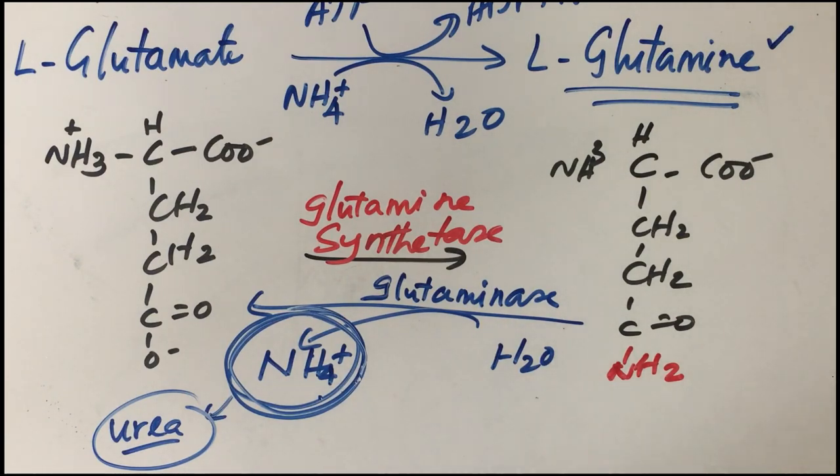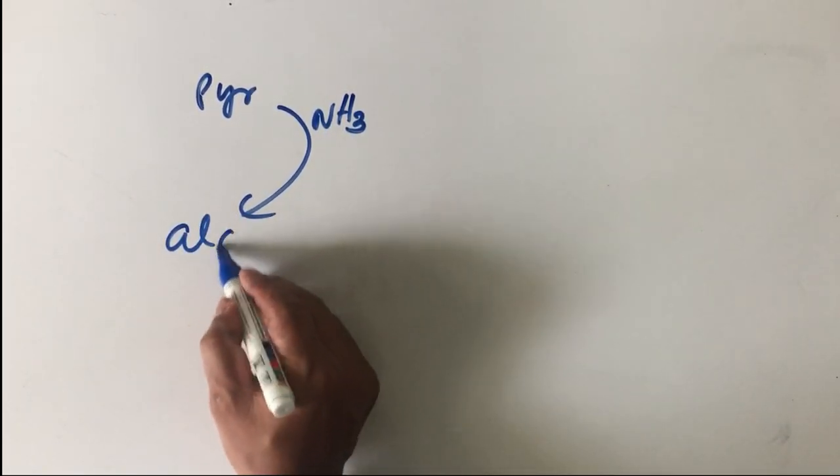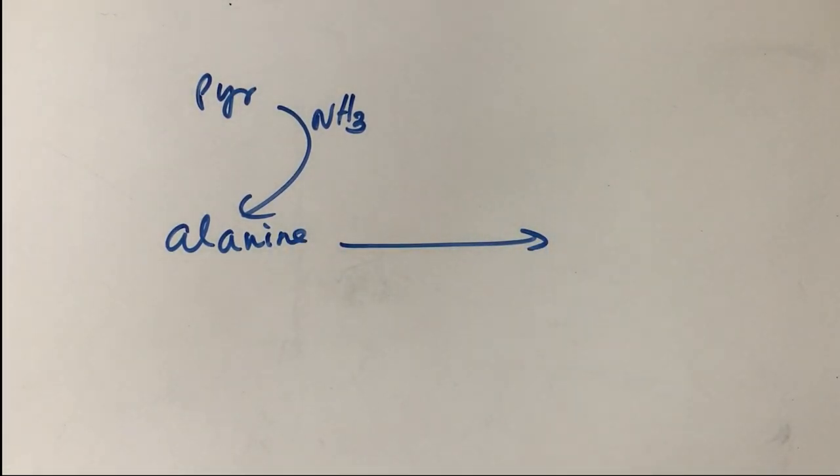Another way to transport ammonia is as alanine. In an earlier session on gluconeogenesis, we discussed the alanine shuttle. Pyruvate accepts an amino group (NH3) to become alanine. This alanine is transported, and the reverse reaction takes place in the liver—that is the glucose-alanine shuttle. I request you to review that session. These are the two ways by which ammonia is transported to liver.